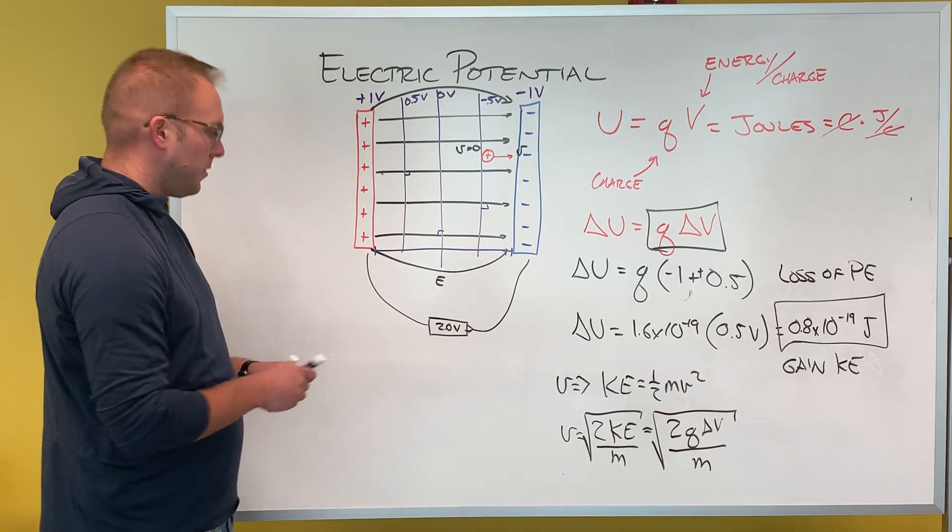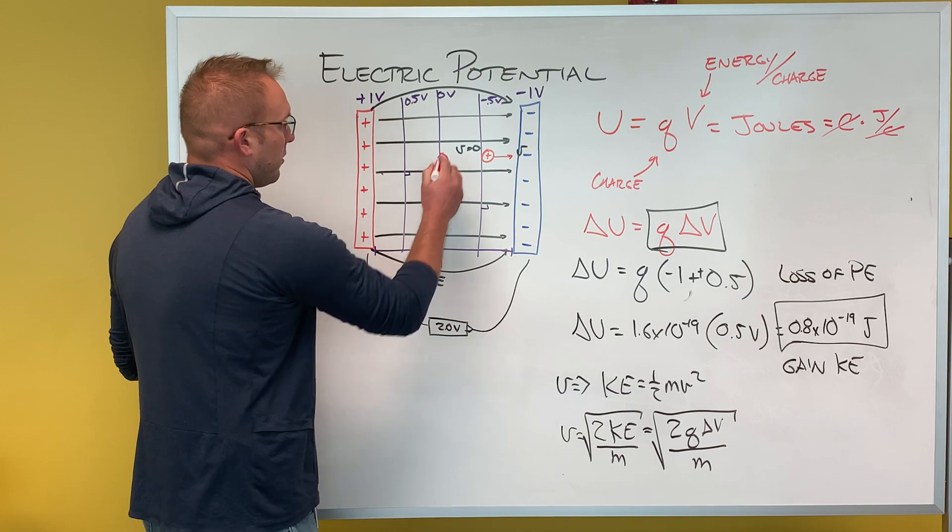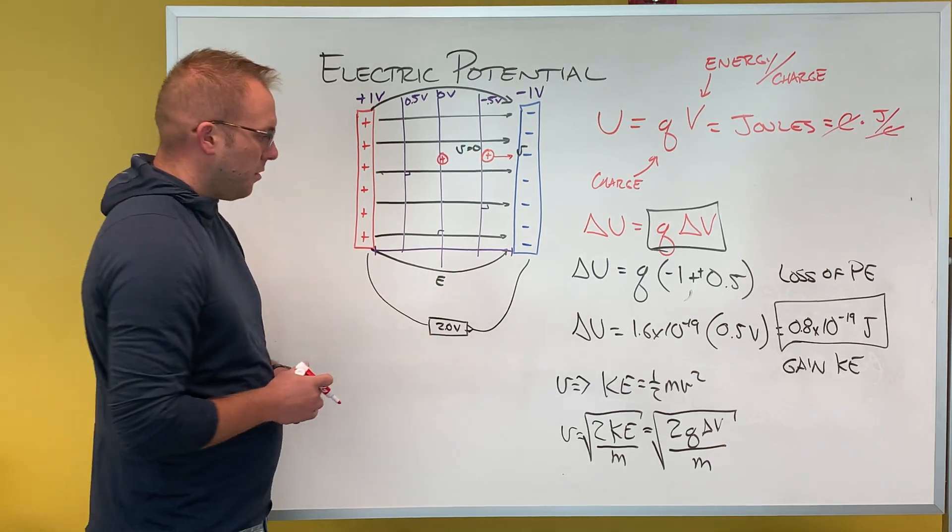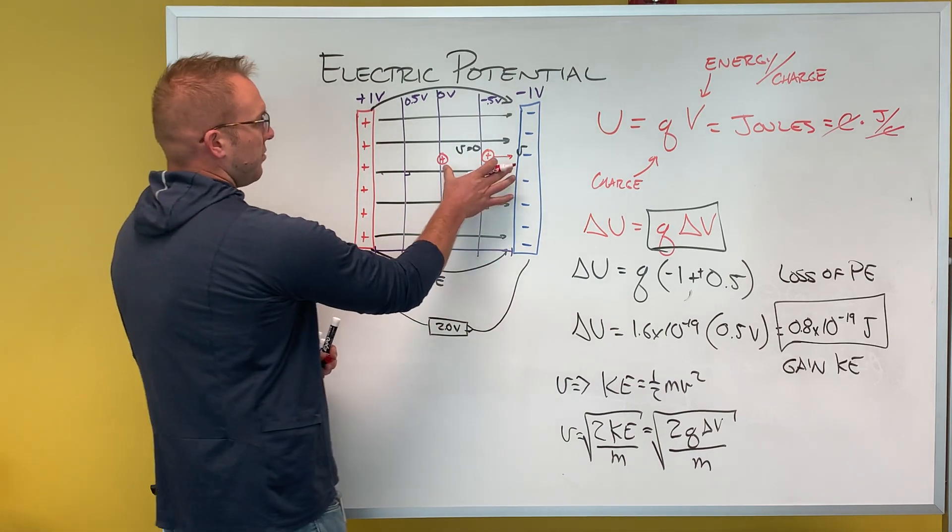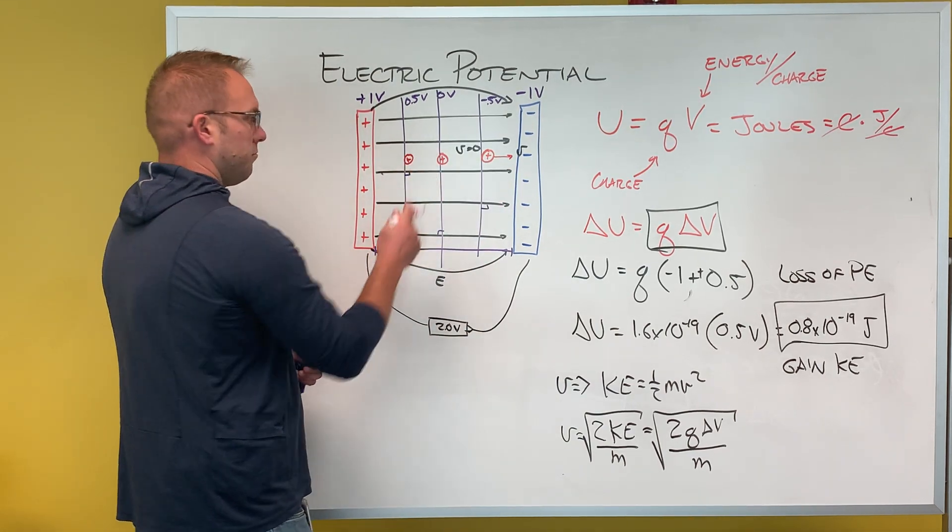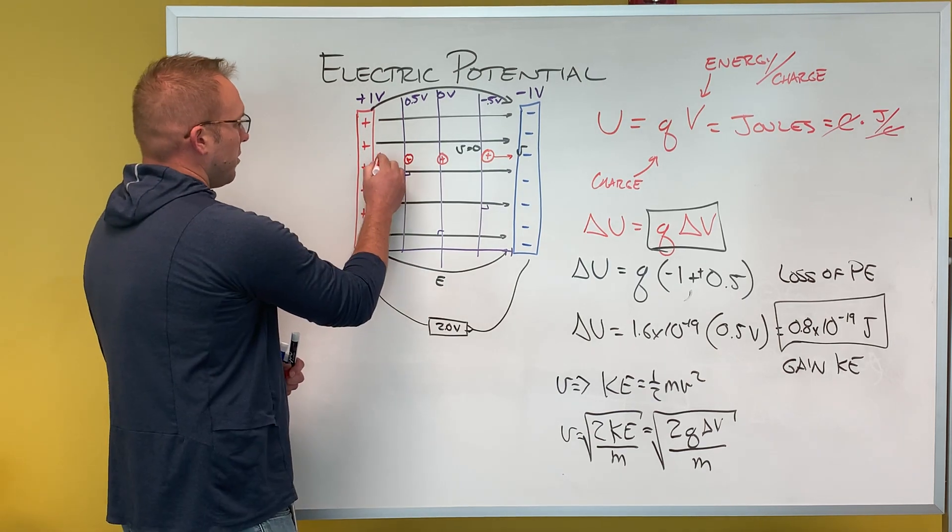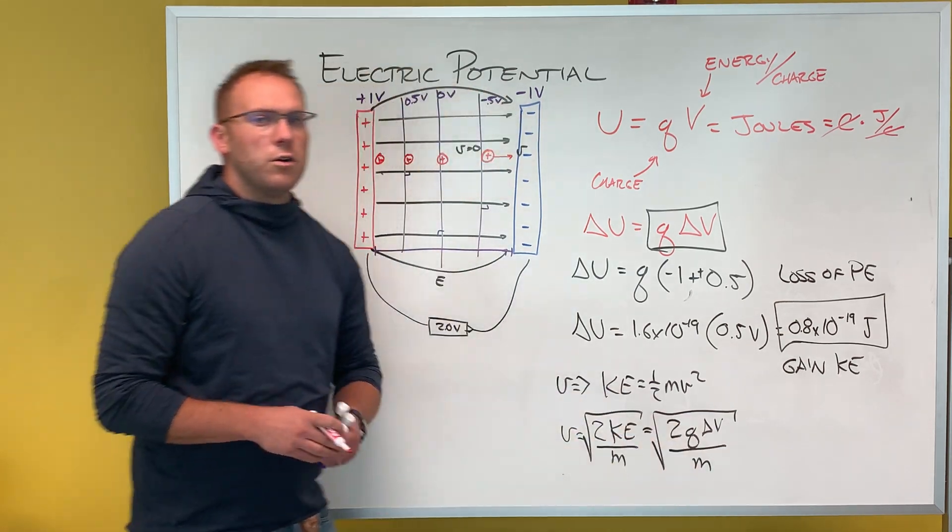So here's what we see. If that positive charge had started here, it's going to hit the plate faster because my delta V is bigger. Now it's a change of potential of one volt instead of just a half. If it started here, it also would hit faster. If it started here, it hit the fastest because my delta V would have been the largest.